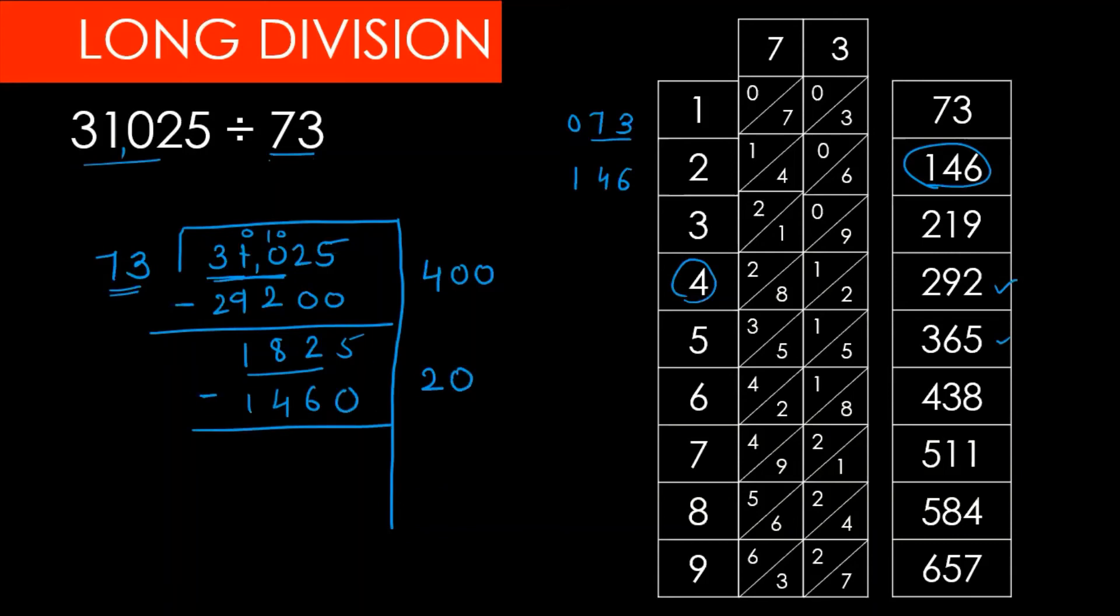5 minus 0 equals 5, here will be 12, so 12 minus 6 equals 6, 7 minus 4 equals 3. Here will be 365, so 73 times 5 is 365. Minus here will be 0, so this will be 0.